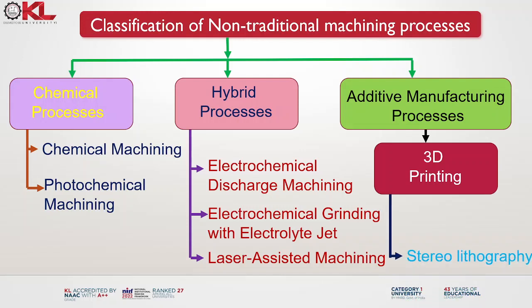A sub-category is stereolithography. Stereolithography is a 3D printing technology that uses a process called photo-polymerization to create three-dimensional objects. It was the first commercial 3D printing technology and is still widely used today. It is commonly used in industries such as automotive, aerospace, healthcare, product design and engineering, particularly well suited for applications that require high accuracy, intricate details and functional prototypes or small-scale production of parts.